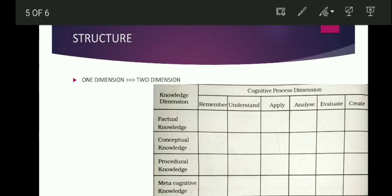Knowledge Dimension is called Factual Knowledge — this is Terminology, Fact, Law. Conceptual Knowledge is classified and categorized. Procedural Knowledge includes Skills, Techniques, Methods.